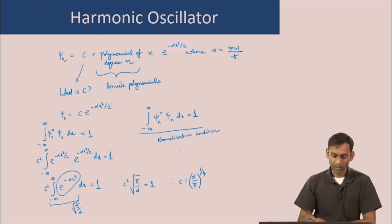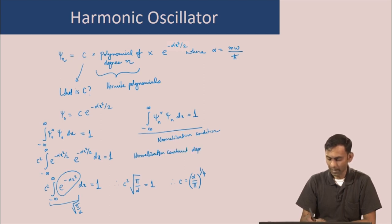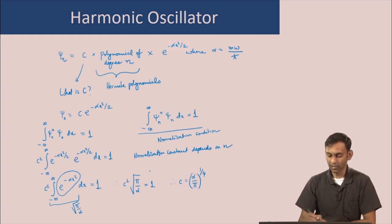The normalization constant depends on n and can be found by applying the normalization condition.